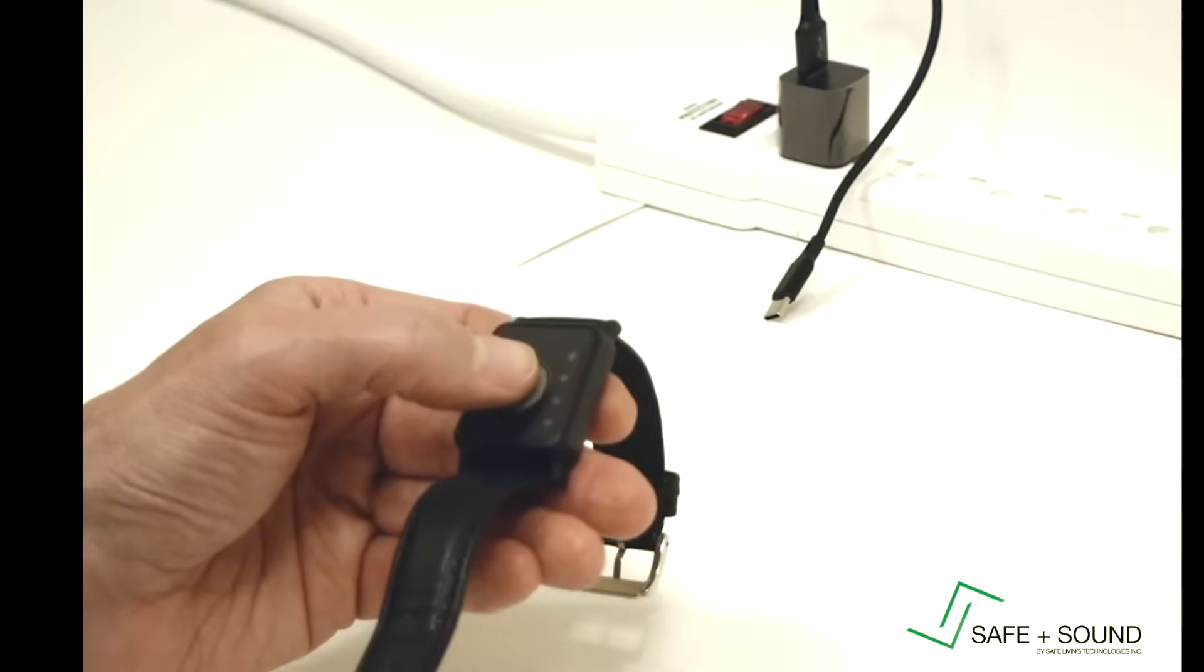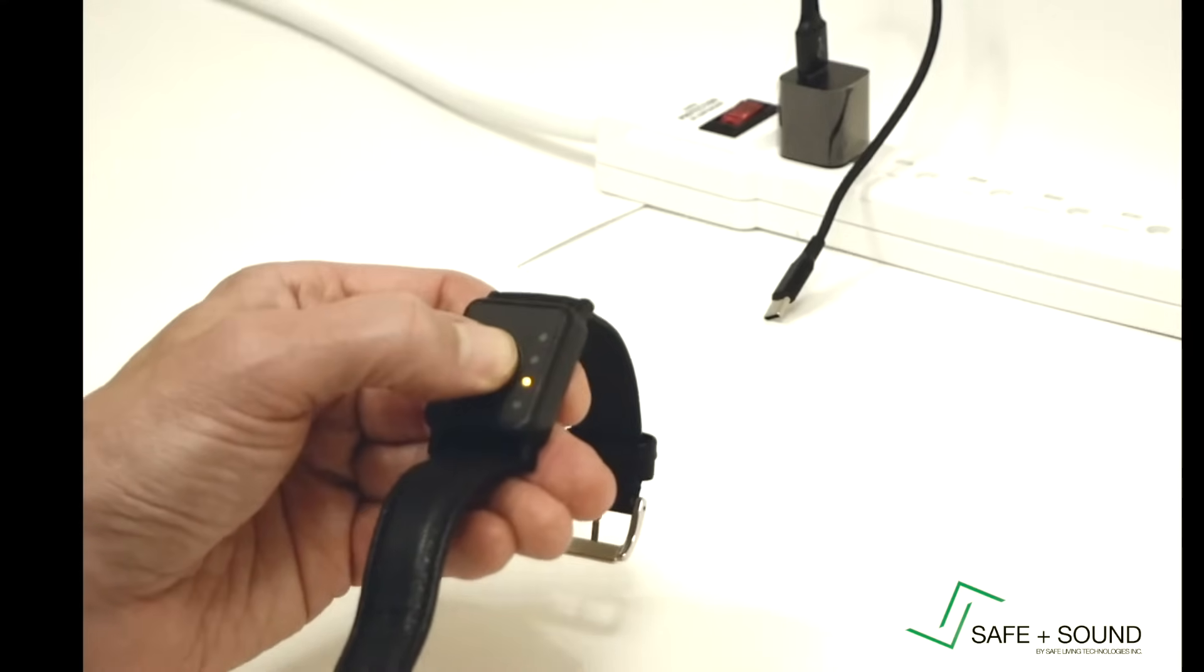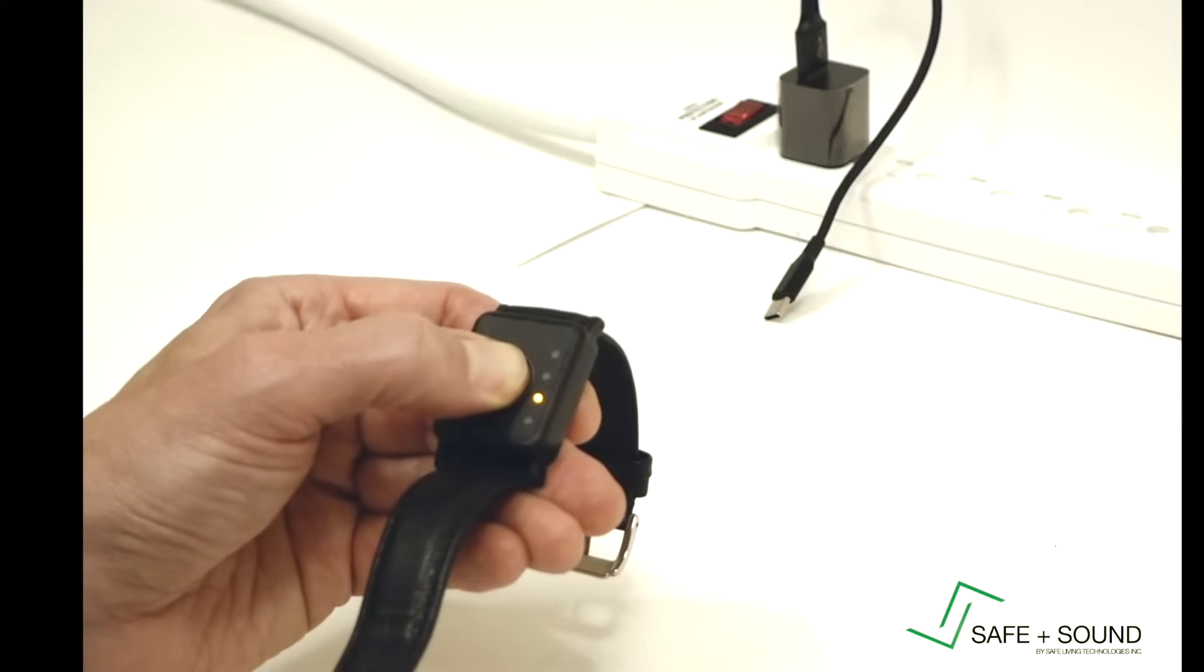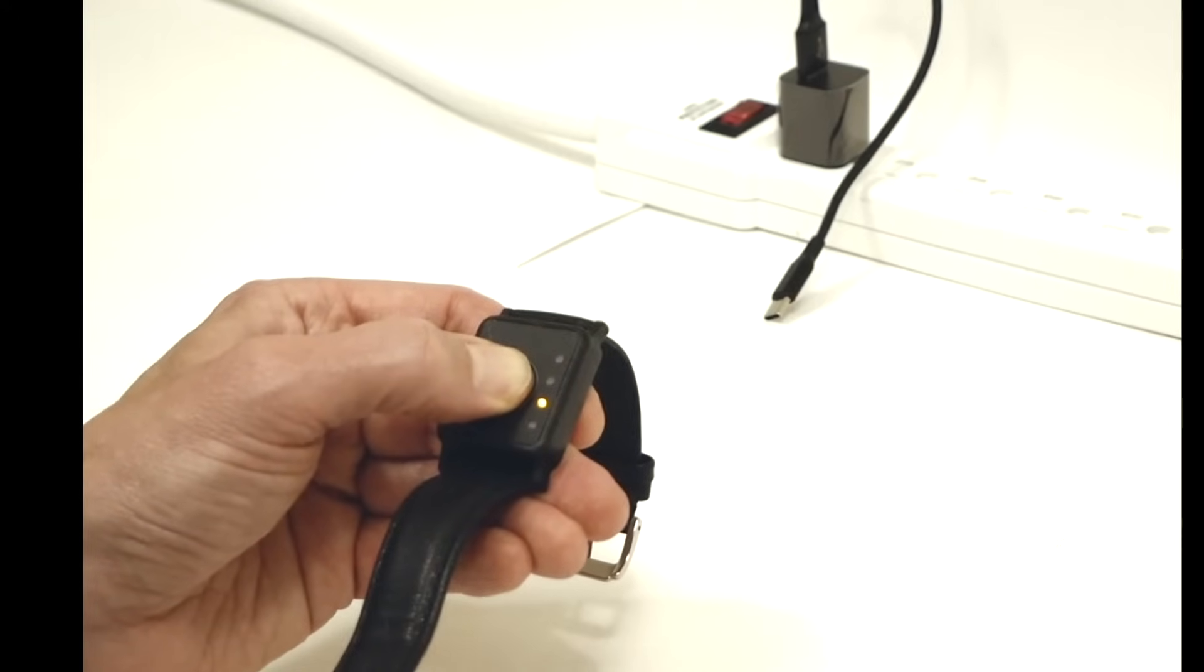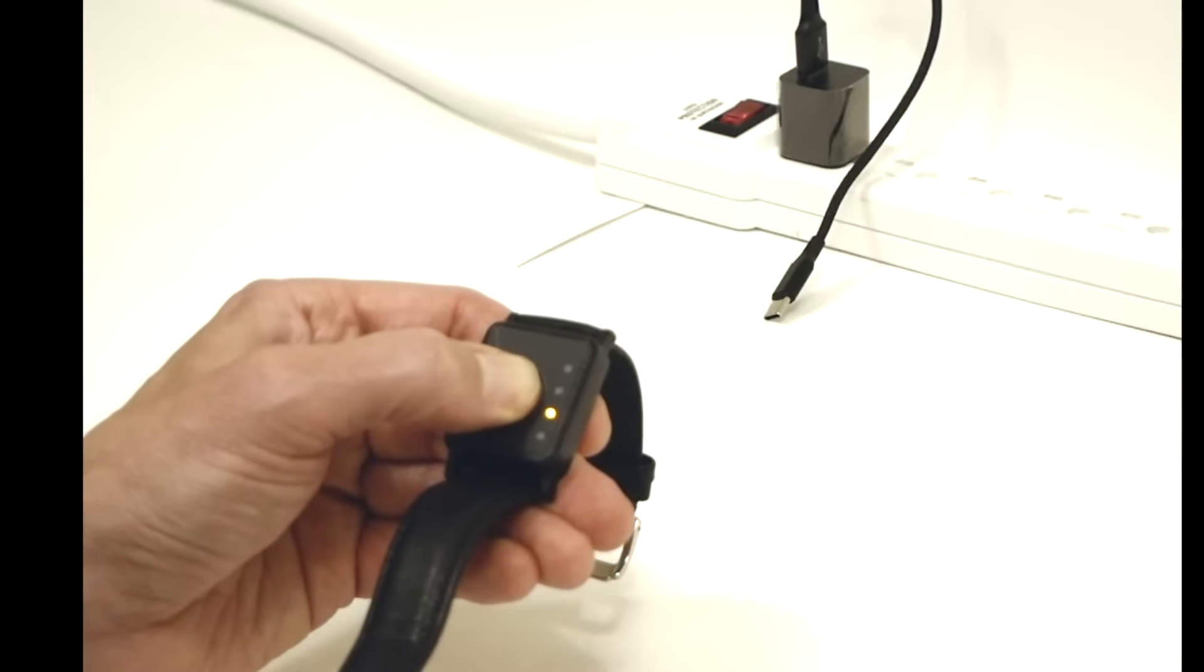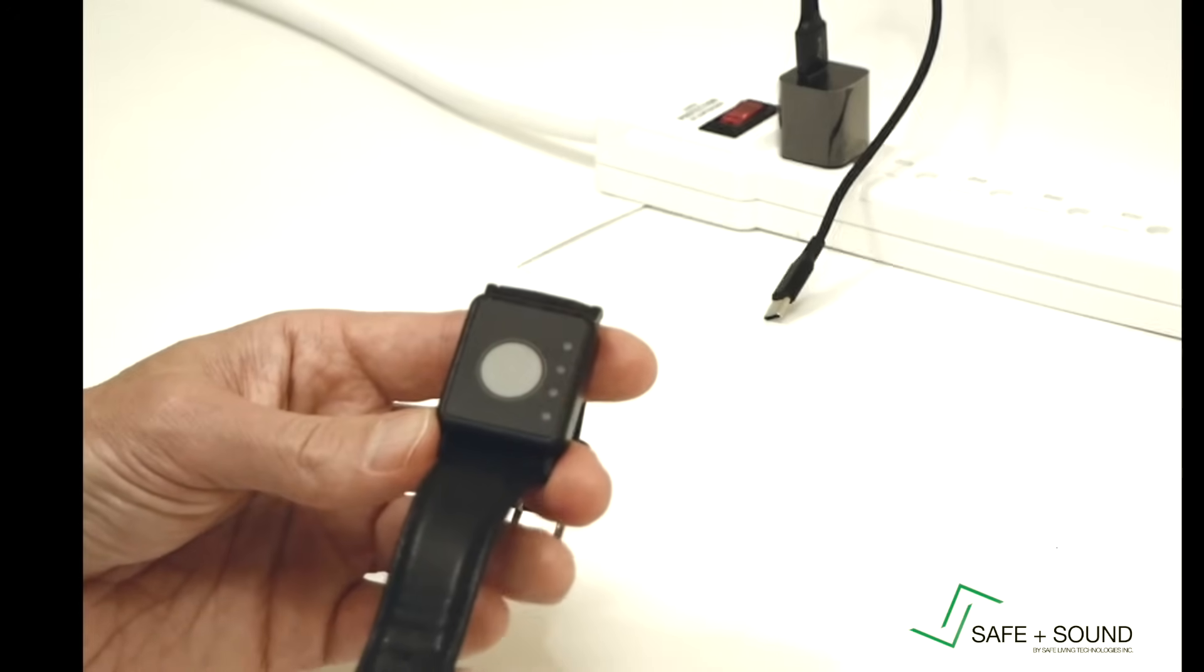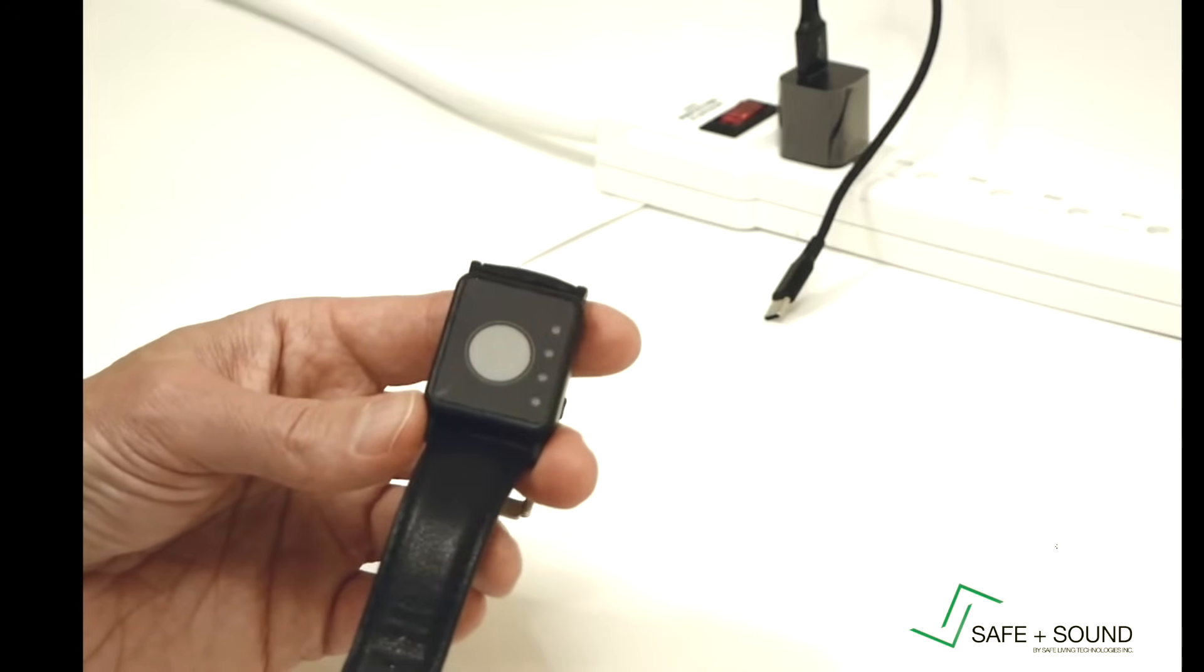That's done by pushing and holding the button for twelve seconds. Zero, one, two, three, four, five, six, seven, eight, nine, ten, eleven, twelve. Now all the lights flashing like this indicates that we are in the utility menu now.